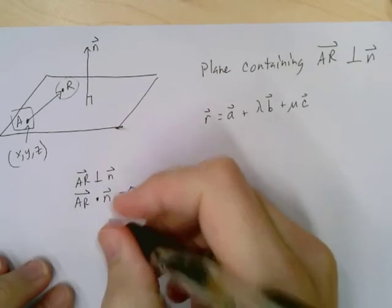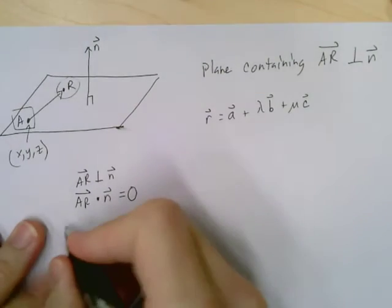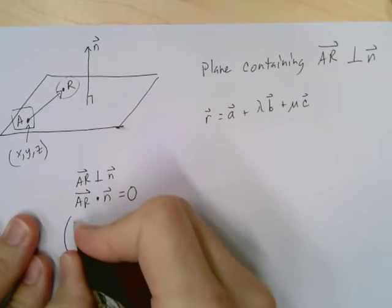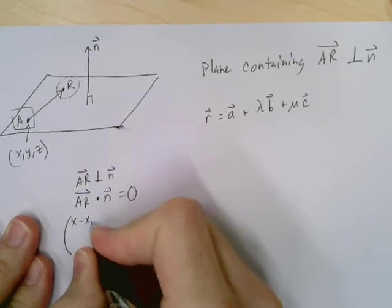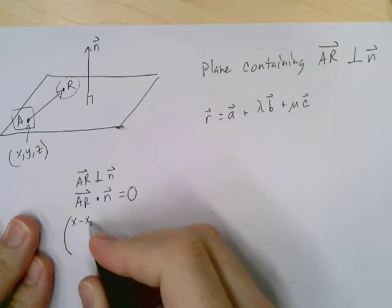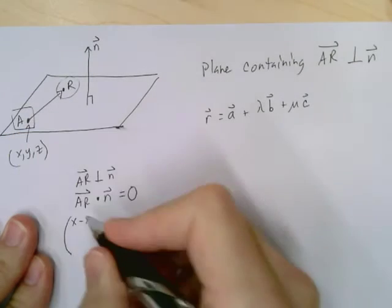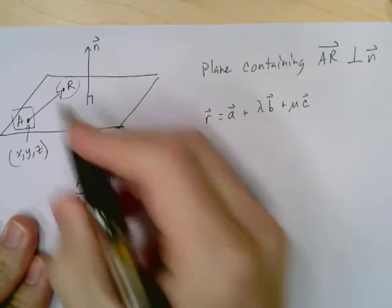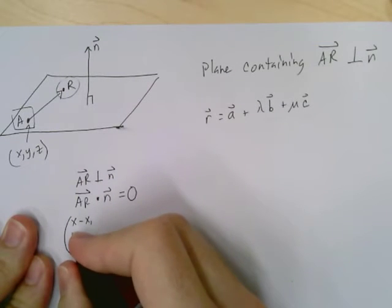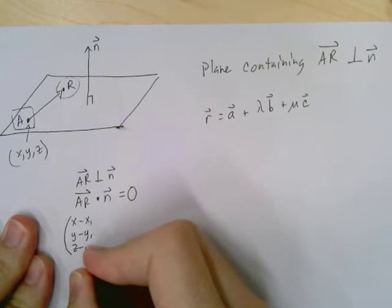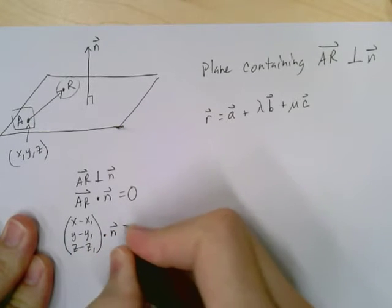Why is that significant? Well, let's go ahead and rewrite AR. AR is going to be the X value of R minus the X value of A, which is the X value of a point. That's why I labeled this one with a one, because that's a specific point in the plane. The R, remember, is supposed to represent any point in the plane. Then we've got Y minus Y1, and of course Z minus Z1, which is still going to be dot product with the N equals zero.